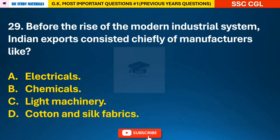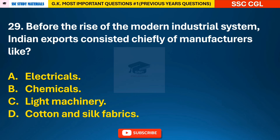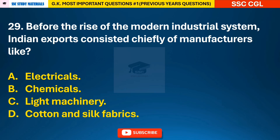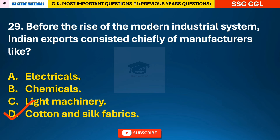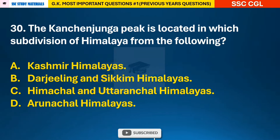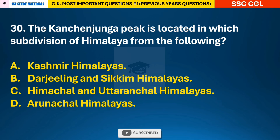Question 29: Before the rise of the modern industrial system, Indian exports consisted chiefly of manufacturers like — answer D: cotton and silk fabrics. Question 30: The Kanchenjunga peak is located in which subdivision of the Himalaya? — answer B: Darjeeling and Sikkim Himalayas.